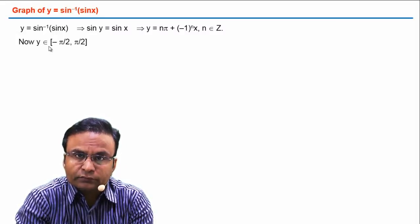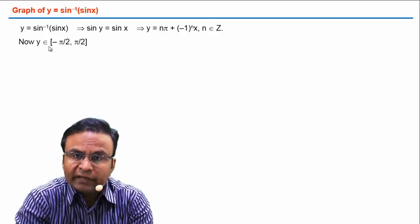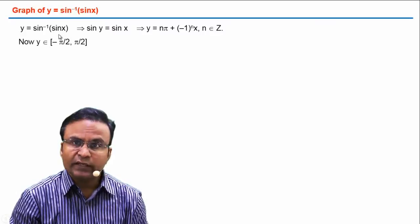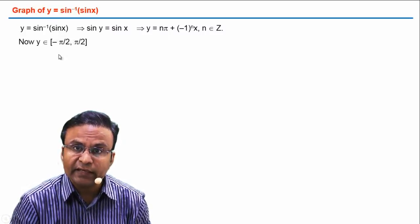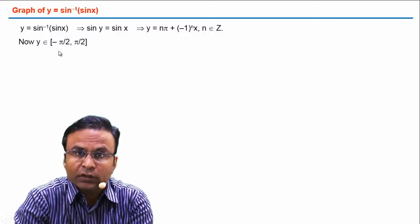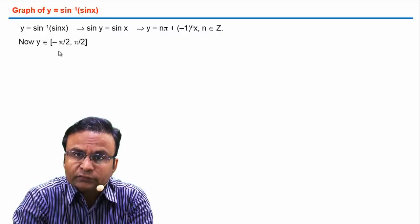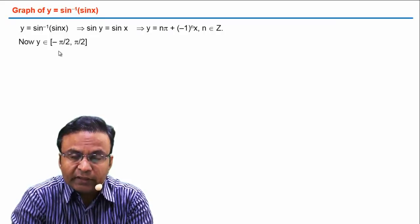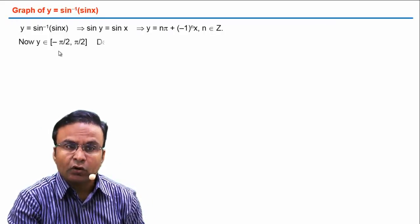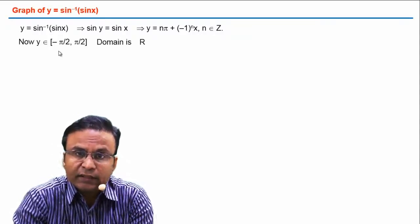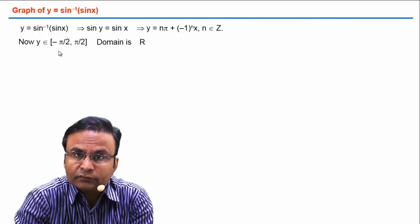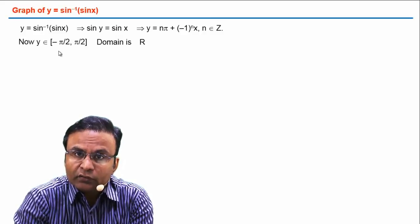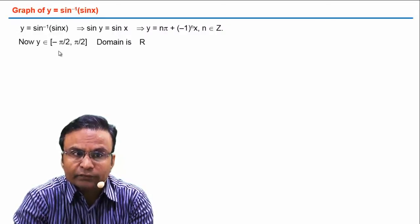Let's find the domain of this function. The function sin⁻¹(sin x) is defined when sin x belongs to [-1, 1]. Since sin x always lies in [-1, 1] for all real values of x, this function has domain of all real numbers. That means the graph exists over all real numbers on the x-axis, and on the y-axis it is limited between -π/2 and π/2.